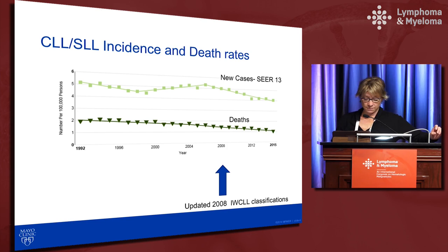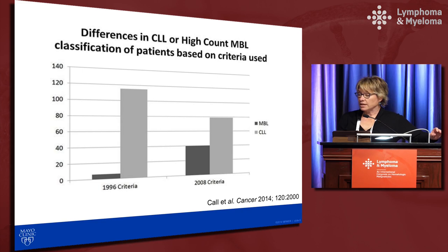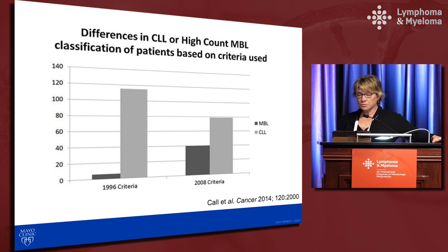Colleague Tim Kahl compared incidence rates using the 1996 criteria, which used the absolute lymphocyte count, versus the 2008 criteria, which uses the absolute B-cell count. The incidence drops by about a third. People who were previously called CLL are now called monoclonal B-cell lymphocytosis, or MBL, and the MBL incidence increases when you change the diagnostic criteria.